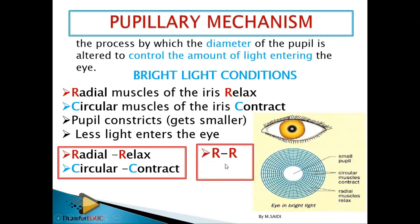So to summarize: radial muscles relax, circular muscles contract, the diameter of the pupil reduces, and less light enters the eye. That is the bright light response.